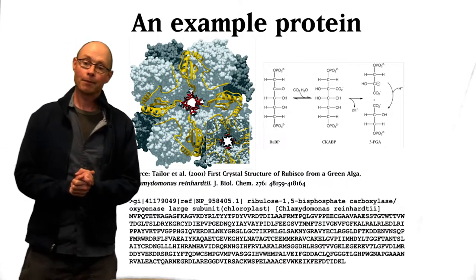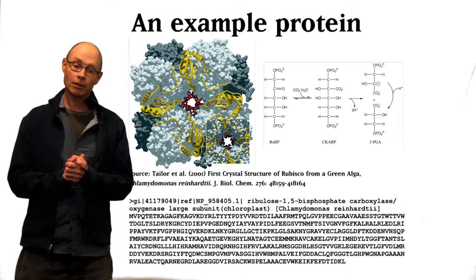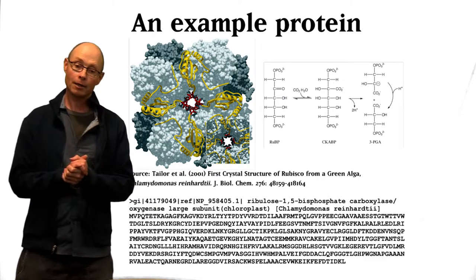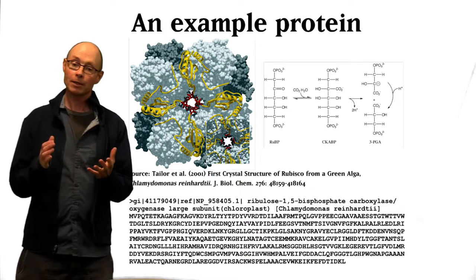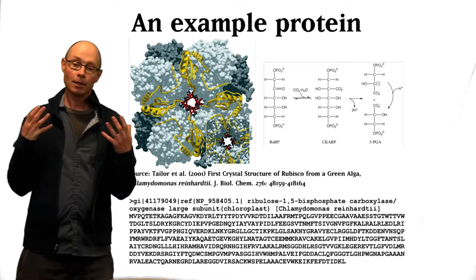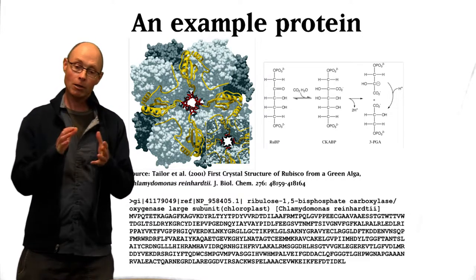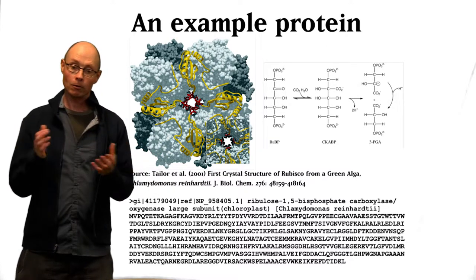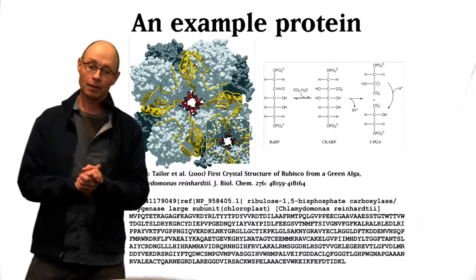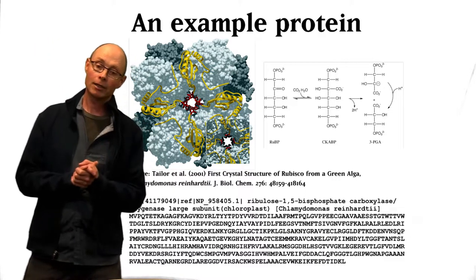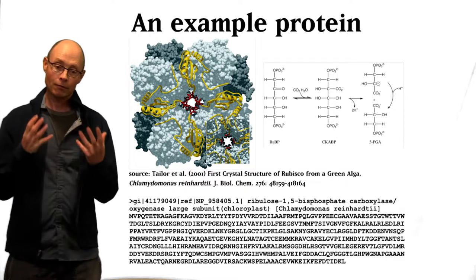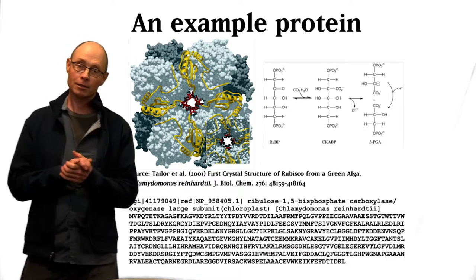After the protein is made, it folds into a 3D structure that actually catalyzes a chemical reaction. This is an example protein — a picture of the 3D structure of Rubisco. Rubisco is the protein that catalyzes the fixation of CO2 by cyanobacteria, algae, and plants. The majority of all CO2 that is converted into biomass is done by this protein — so oil reservoirs, coal reservoirs, your body, all made of molecules that start with this protein. Below you see a representation of the order of amino acids that make the polymer.